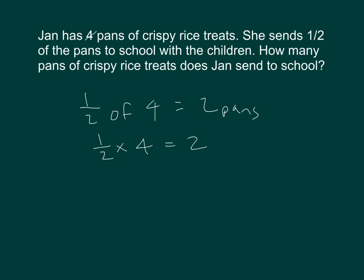Imagine now that Jan, instead of four pans, has two pans. You take one half of two, which is equal to one pan. Now imagine she has one pan. You take one half of one, which equals one half.